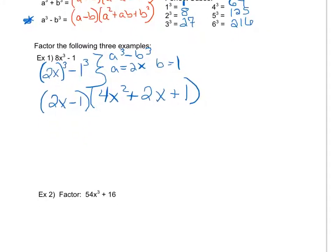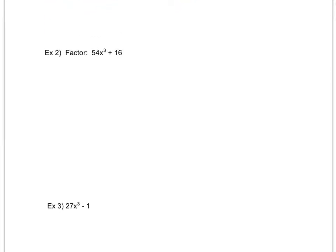Let's look at the second example. On this example, the first step is always going to be to check for GCF. I know 54 and 16 can both be divided by 2, so I factor out a 2, and I get 27x cubed plus 8. Well, again, I notice that this is in the form a cubed plus b cubed, where my a, my 27x cubed, comes from having an a value of 3x. My b, or my 8, comes from having a b value of 2.